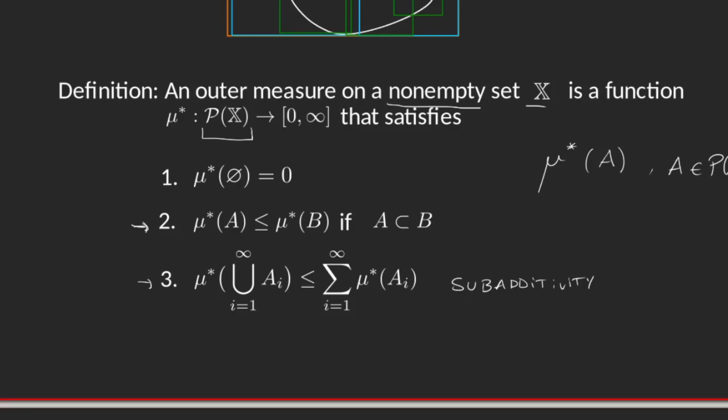So outer measures are functions that go from parts of the set to [0,∞] and that satisfy these three properties. And again, property number three has weakened the property that measures had. So we managed to find the function μ* defined on a weaker set because it's a trivial sigma algebra and that satisfies a condition that's weaker than additivity.